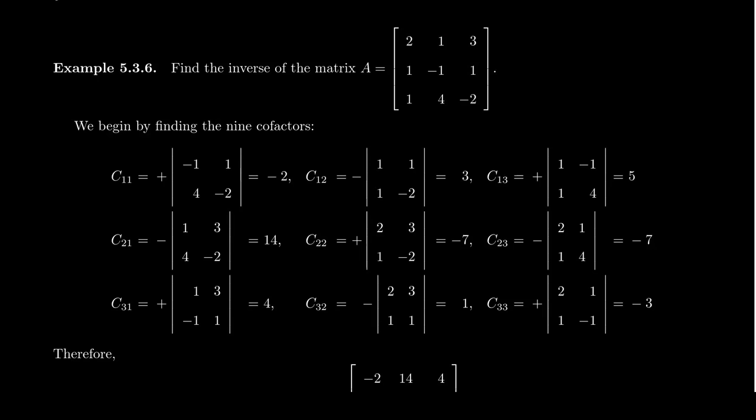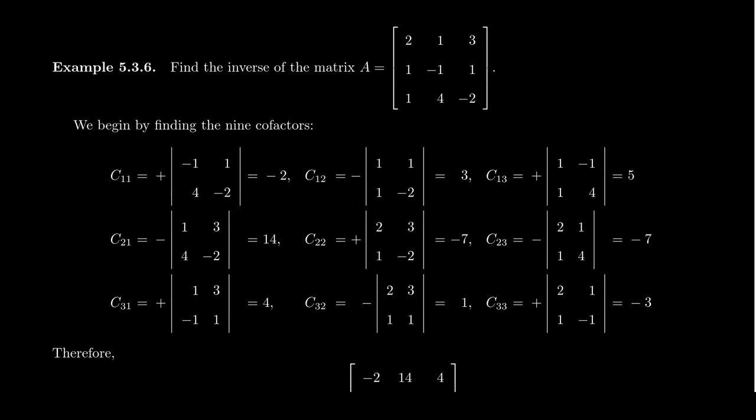And you do this 6 more times. You get all the different cofactors. The 2-1 cofactor is 14. The 2-2 cofactor is negative 7. 2-3 will give us negative 7. 3-1 will give us 4. 3-2 will give you 1. And the 3-3 will give you negative 3. So those are all the cofactors. You can double check the details yourself.